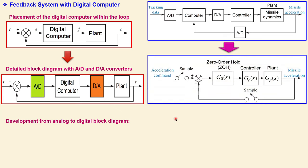Now let's apply the Jury stability test. The characteristic equation is already determined. For the general second-order polynomial a₂z² + a₁z + a₀ = 0, we compare terms: a₂ = 1, a₁ = 0.368k - 1.368, and a₀ = 0.264k + 0.368. For an n = 2 order system, we have 2n - 3 = 1 row, so we don't even need to set up the Jury table. We have n + 1 = 3 constraints to check.